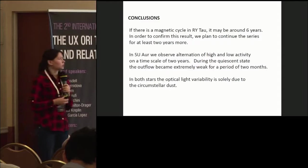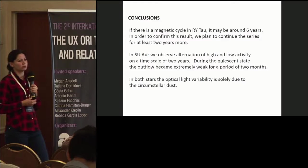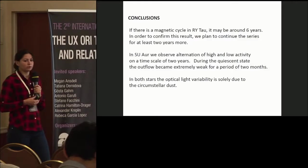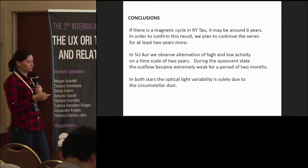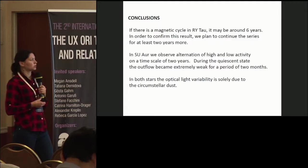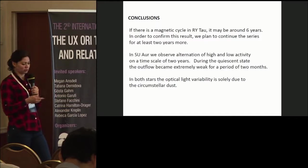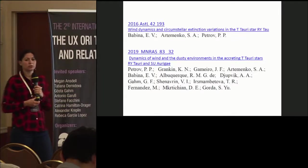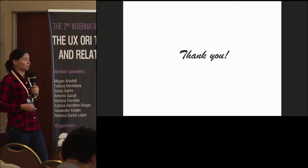So my conclusions are that if there is a magnetic cycle in RY Tauri, it may be around six years. In order to confirm this result, we plan to continue our series of observations during at least two years more. Now, in SU Auriga, we observe alternations of high and low activity on time scales of two years. And during the quiescent state, the outflow became extremely weak for a period of two months. In both stars, the optical light variability is solely due to the circumstellar dust. Previous results of our project were published in these two papers. You are welcome to read them. And thank you for your attention.